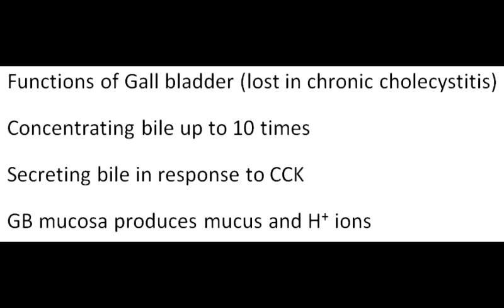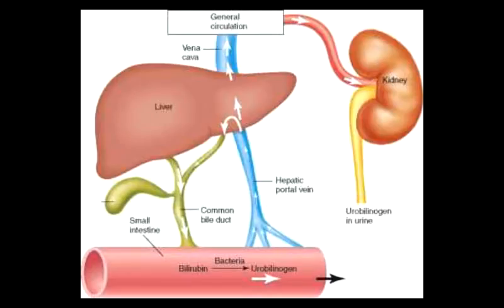The gallbladder concentrates the bile by 10 times. It also stores the bile and secretes it in response to cholecystokinin. The gallbladder secretes mucus and hydrogen ions. The mucus protects the mucosa and hydrogen ions maintain acidic pH, preventing calcium precipitation. The bile emulsifies the fats. 80% of the bile acids are absorbed in the terminal ileum. 20% is deconjugated by the gut bacteria, forming secondary bile acids: deoxycholate and lithocholate. These also enter the enterohepatic circulation. Only 5% of the bile acid pool is excreted in the stools.